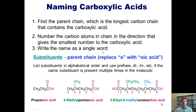Third, we have to write the parent chain name, and we replace the E that would normally be present at the end of that alkane name — for example, ethane, propane, or butane — with the suffix -oic acid. If there are any substituents along that chain, we list them in alphabetical order and use prefixes di, tri, etc., if the same substituent is present multiple times in the molecule.